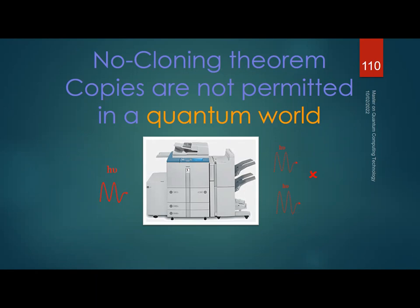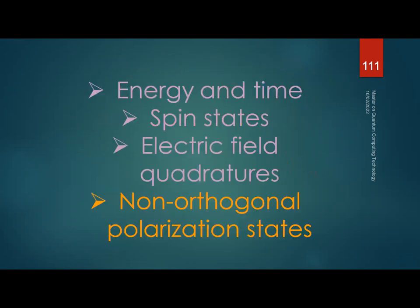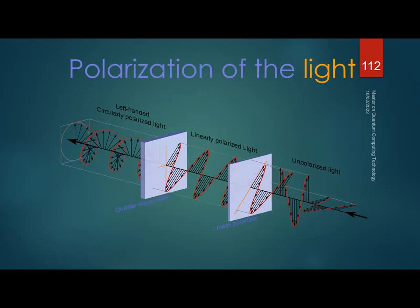Cloning would violate the Heisenberg uncertainty principle because you could then measure both position and velocity in each particle without error. Returning to the uncertainty principle — the magnitudes we're interested in are non-orthogonal polarization states. Polarization of light is the way the electromagnetic field of light vibrates — it can be circular, linear, or unpolarized.